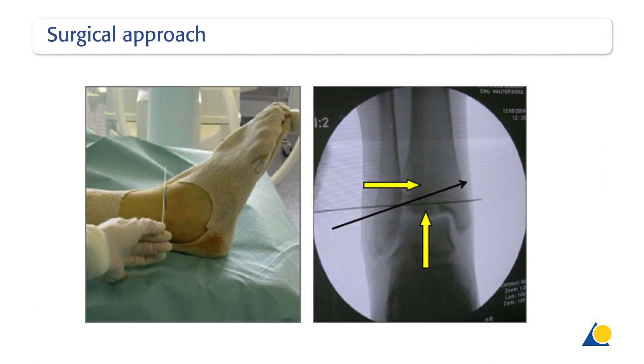In the majority of cases, a closed reduction and percutaneous screw fixation can be performed. Under image intensifier control, the direction of the guide wire for the cannulated screw is marked on the skin. Note that the guide wire for the cannulated screw crosses the physis in an oblique way, which allows for indirect reduction and compression of the fragment in the horizontal as well as the vertical direction.